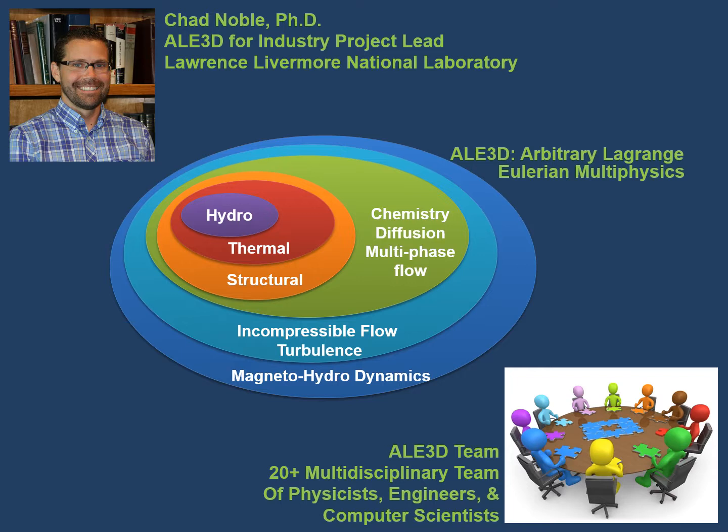AL3D for Industry is a new version of our AL3D Multi-Physics Finite Element Code that we are providing for our industrial and academic partners. AL3D stands for Arbitrary Lagrange Eulerian in Three Dimensions. The software code project has been under development for 30 plus years by a multidisciplinary team of physicists, engineers, and computer scientists. AL3D has been offered to 250 plus government contractors across the United States, and we have offered the physics you see here in one code.